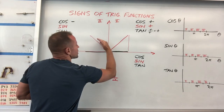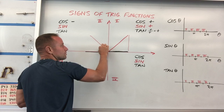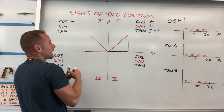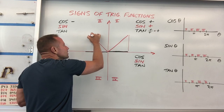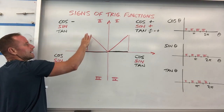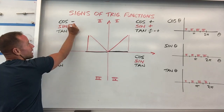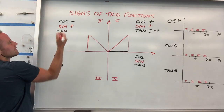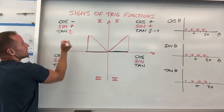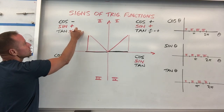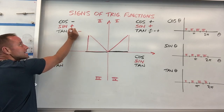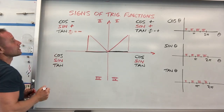Sine finds the projection that's opposite of this reference angle — it finds the projection onto the vertical axis. So you're really going to be looking at this segment, which is still pointing along positive y. So sine is going to be positive over here. And tangent is sine over cosine, so you'd have plus over minus. So your tangent function is going to be negative here, because anything positive over negative gives you a negative result.